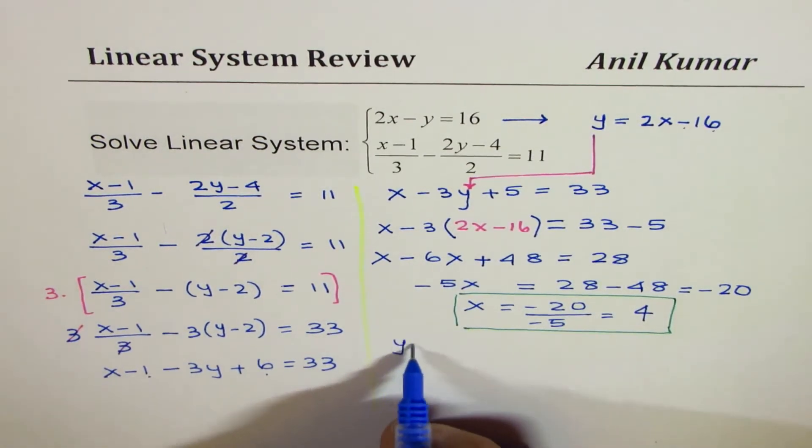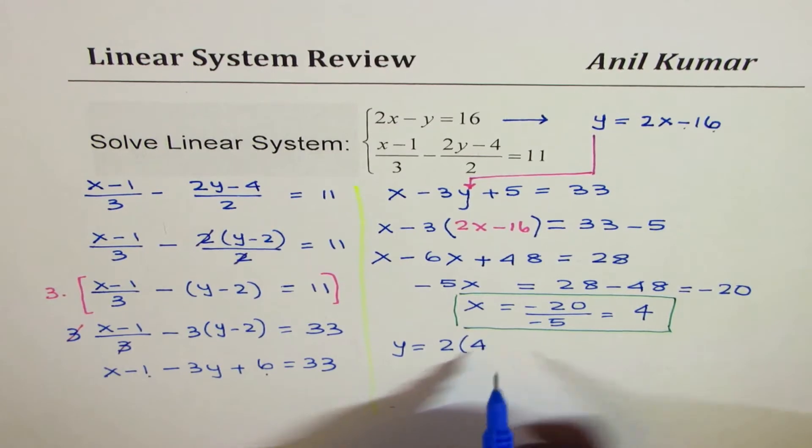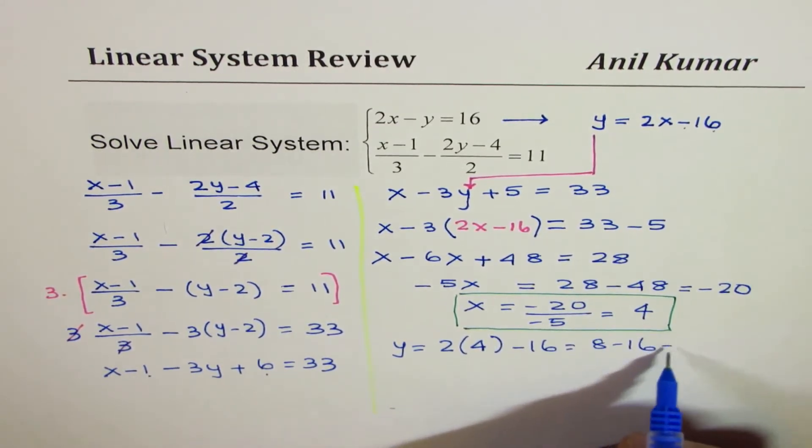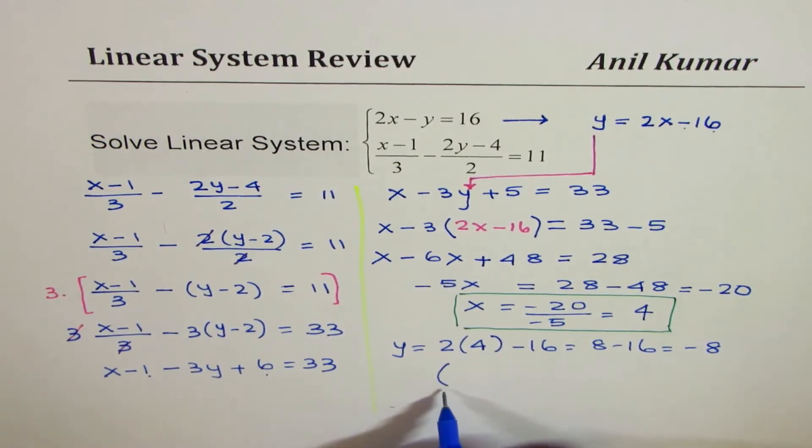Now we can find what y is. Y is 2 times x, which is 4, minus 16. That is 8 minus 16, or minus 8. And therefore, the solution is 4, minus 8. So that is our answer.